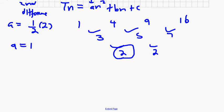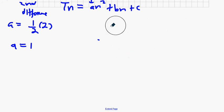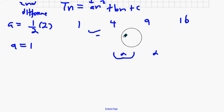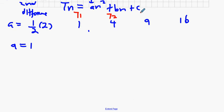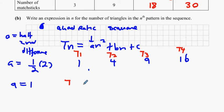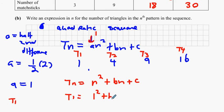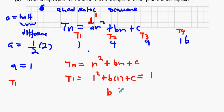So a equals half of two, so a equals one. Since a equals one, the formula is n squared plus bn plus c. Looking at t1 through t4: t1 gives one squared plus b times one plus c equals one, which means b plus c equals zero.